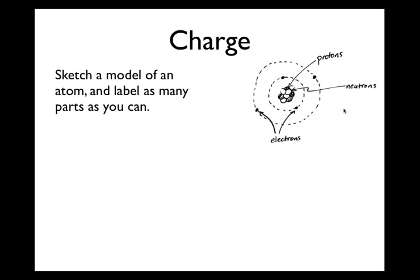In fact, this particular model picture, which is often called the Bohr model, is now known to be wrong, but it's right enough for us to understand the electrical properties of things we want to study in this course. Since the electron cloud model, based on quantum mechanics, is more complicated both to draw and to understand, we can stick with this kind of model to think about how things develop electric charge and how they respond to one another.